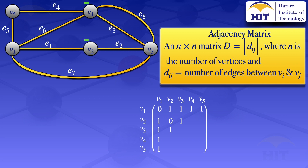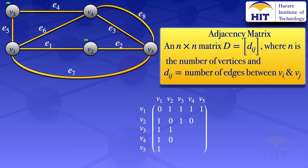Between v2 and v4, there are no edges, so we put zero at v2,v4 and also at v4,v2. Between v2 and v5, there are no edges, so we put zero at v2,v5 and also at v5,v2.